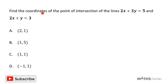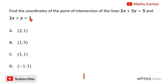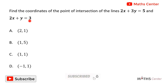Find the coordinates of the point of intersection of the lines 2x plus 3y equals 5 and 2x plus y equals 3. This is a multiple choice question, so you solve the question and then pick the correct option.